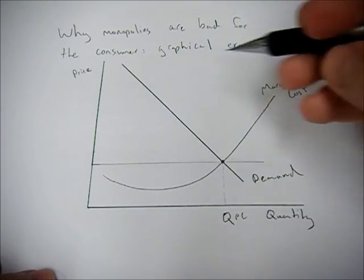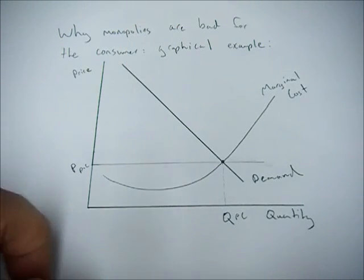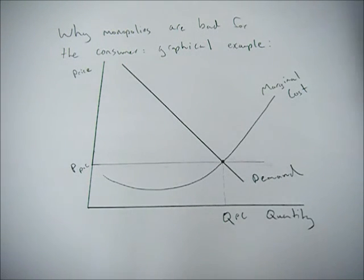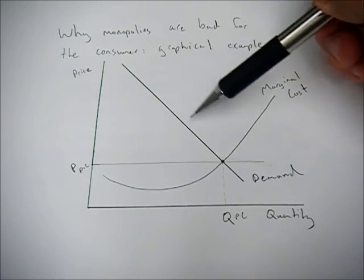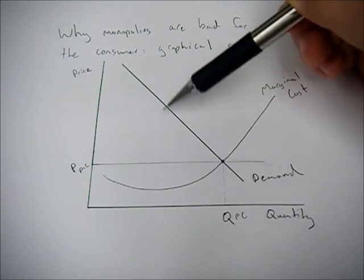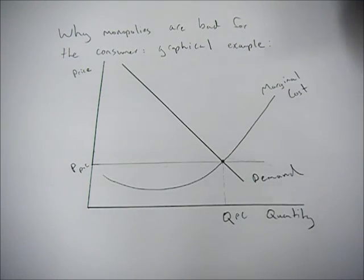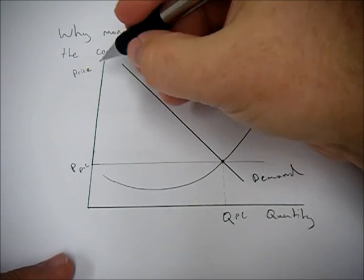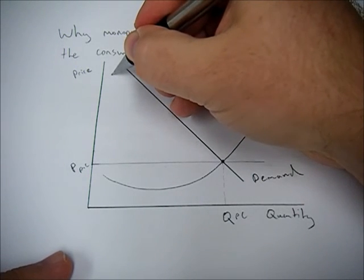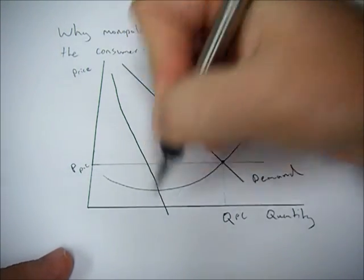But what happens with the monopoly is they observe this demand curve and they know that they can restrict quantity and get a higher price, or they can lower the price and sell more. So because of this fact, economists like to draw this marginal revenue curve.